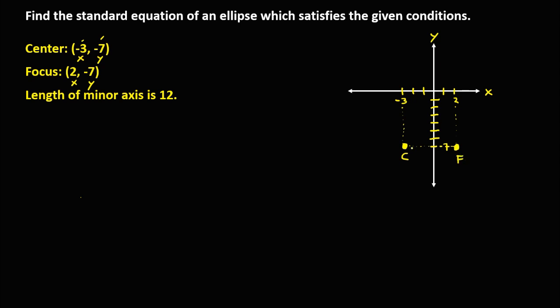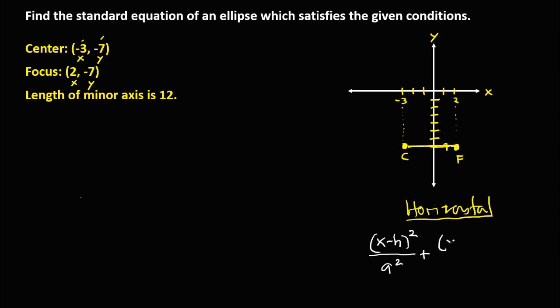Observe that from center to focus is on horizontal form. Since center to focus is horizontal, the ellipse is in horizontal form. The formula for the standard equation of an ellipse in horizontal form is: x minus h squared over a squared, plus y minus k squared over b squared, equals 1.